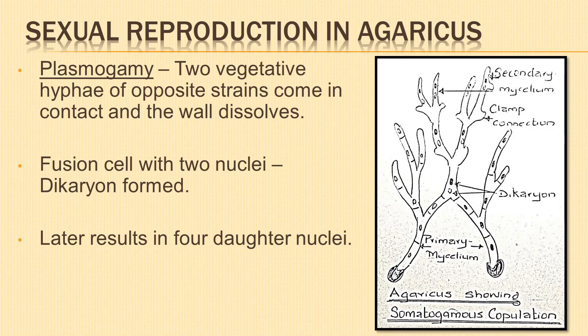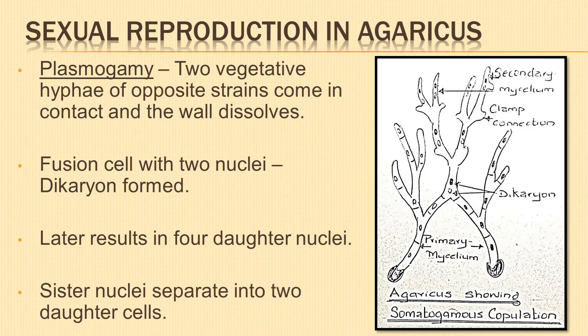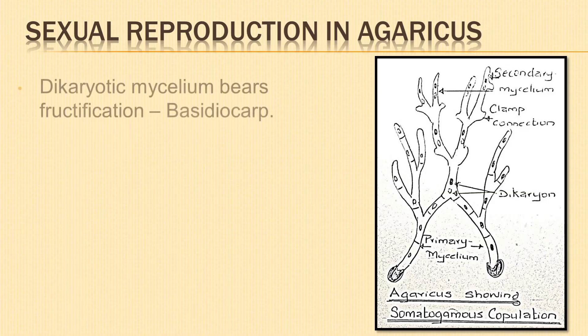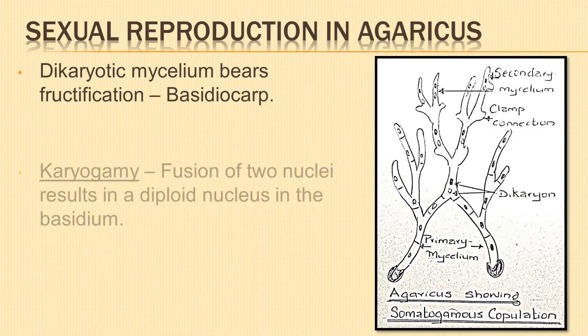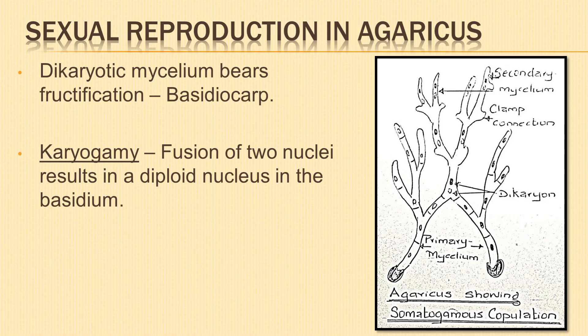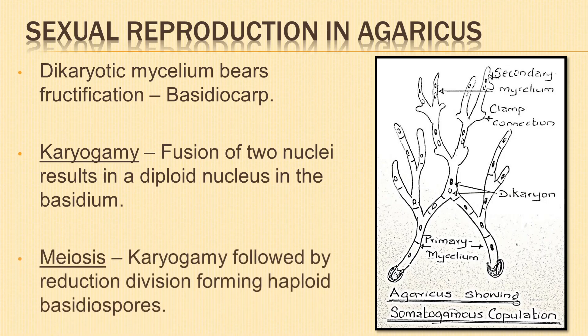Both nuclei of the dikaryon divide synchronously resulting in four daughter nuclei. The sister nuclei separate into two daughter cells forming the dikaryotic mycelium, which is the chief food-absorbing phase of the fungus and later bears fructifications called basidiocarps. The fusion of the two nuclei of the dikaryon results in the formation of a diploid nucleus — this is known as karyogamy. It takes place in the young basidium and is immediately followed by meiosis, leading to the formation of haploid basidiospores.